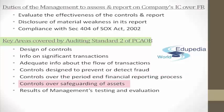Number six: controls over safeguarding of assets — ensuring that assets are properly guarded and the relevant provisions for safeguarding of assets are in place. And finally, number seven: results of management's testing and evaluation. So the key areas covered by Auditing Standard 2 of PCAOB are: design of controls, information on significant transactions, adequate information about the flow of transactions, controls designed to prevent and detect fraud, controls over the period-end financial reporting process, controls over safeguarding of assets, and results of management's testing and evaluation.